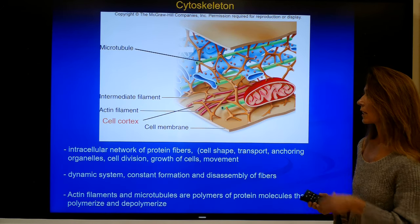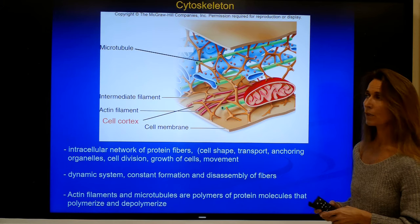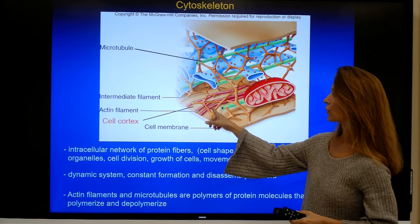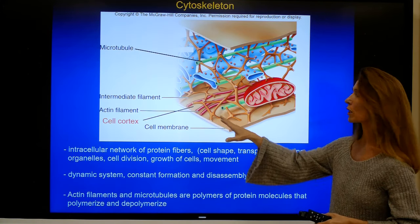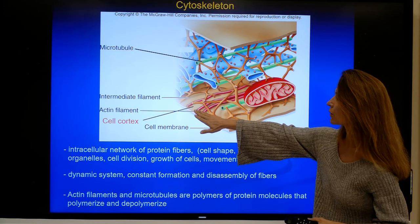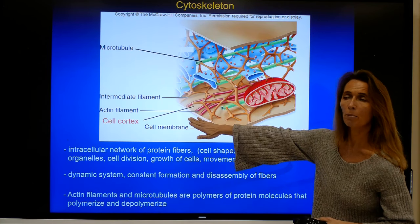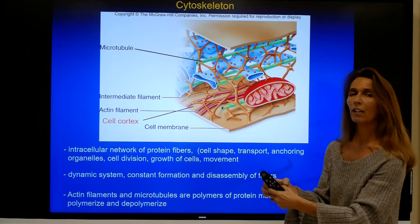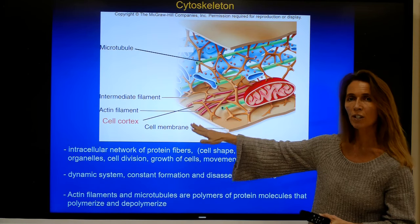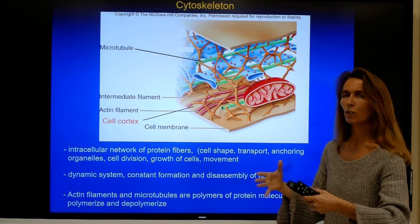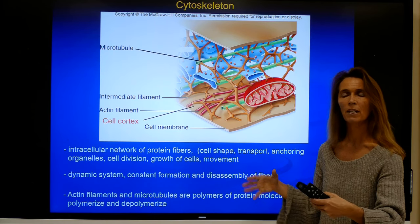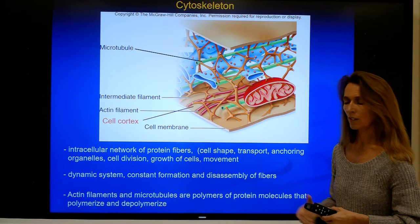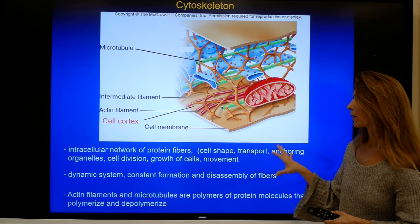Moving on to the cytoskeleton, it has a number of different components. There are the microtubules, which are the biggest of the filaments. There are the intermediate filaments, shown here in orange. And there are the smallest ones, the actin filaments, which are usually located more at the cortex of a cell, close to the cell membrane. One reason for this is that actin filaments play an important role in cell adhesion molecules, so they are often anchored to adhesion molecules and for that reason are more at the cortex. All of these filaments form this intracellular network — they are all proteinous fibers and they are very dynamic.